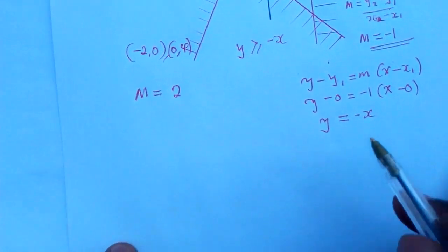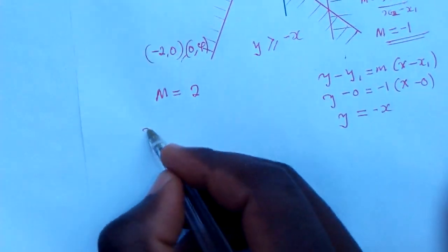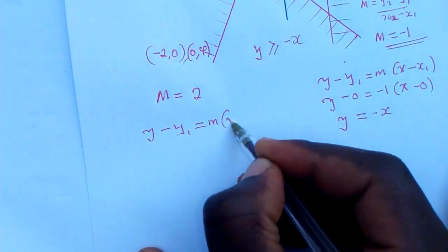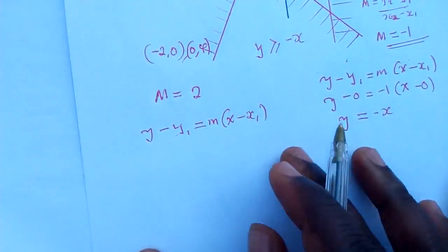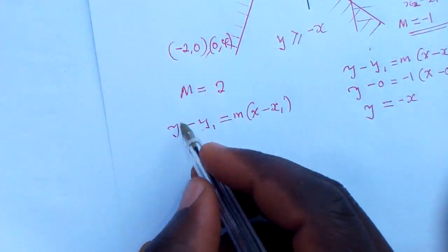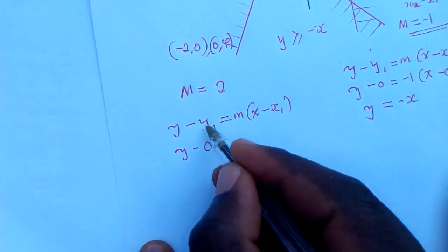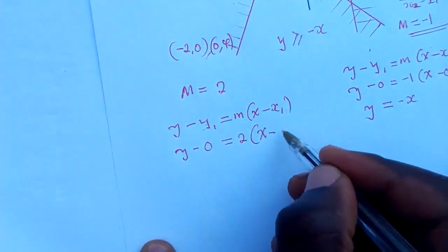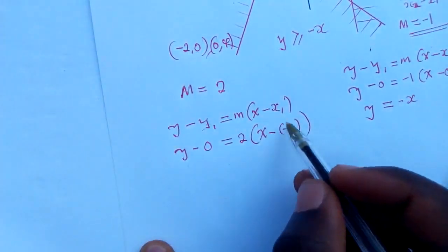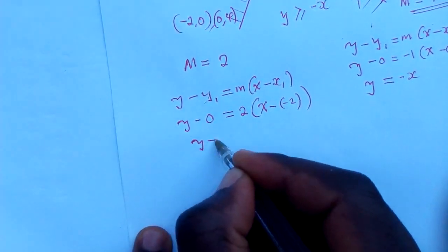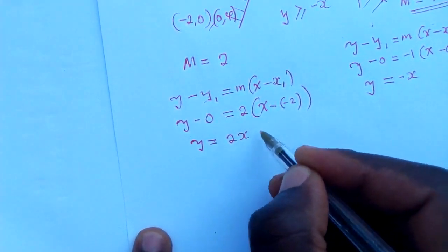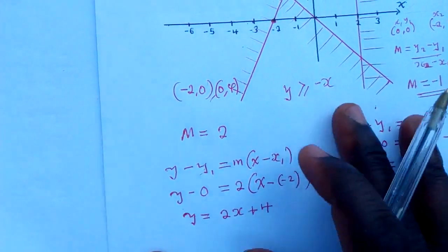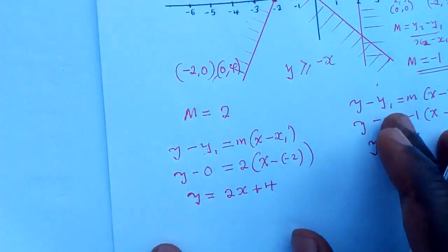Once we find that m equals 2, we use the equation formula y minus y₁ equals m times (x minus x₁). We pick the point (0, 4): y₁ is 0, m is 2, and x₁ is negative 2. After solving, you get the equation for this line.